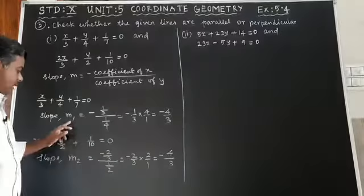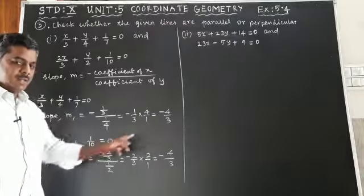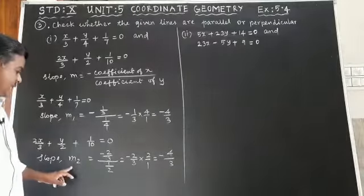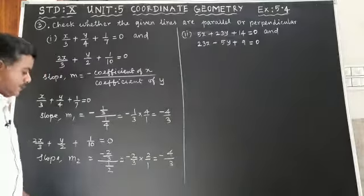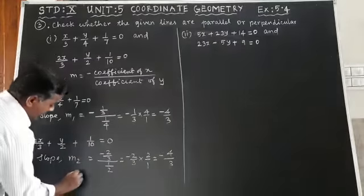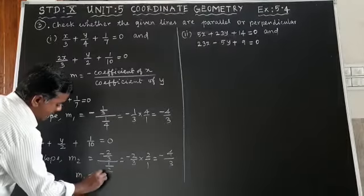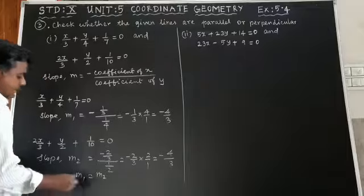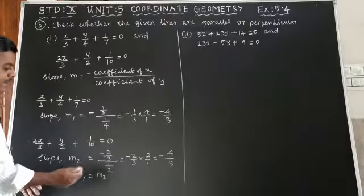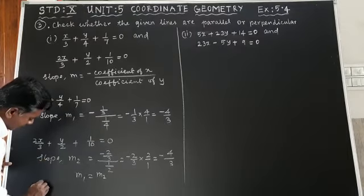Here m1 = -4/3 and m2 = -4/3, so m1 is equal to m2. Since the slopes are equal, the given straight lines are parallel.